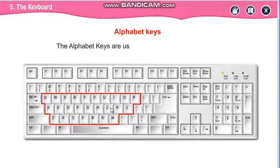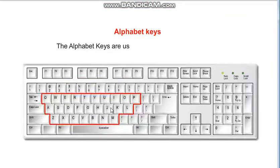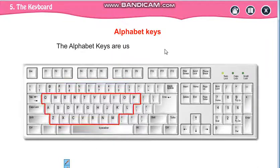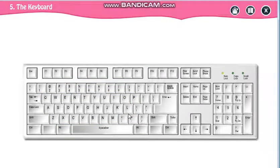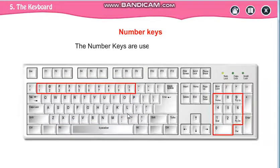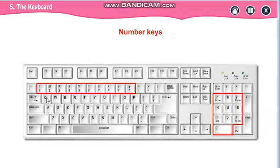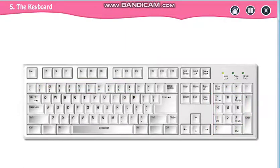How many alphabet keys are there on the keyboard? 26. So 26 alphabet keys are there. Then the number keys — how many number keys are there? They are present at two places: here 10 and there 10. And the numbers are from 0 to 9.